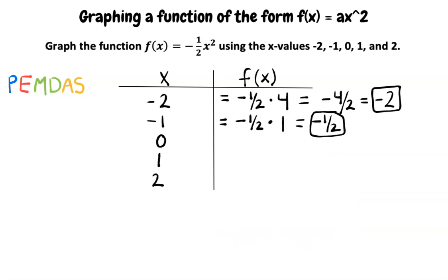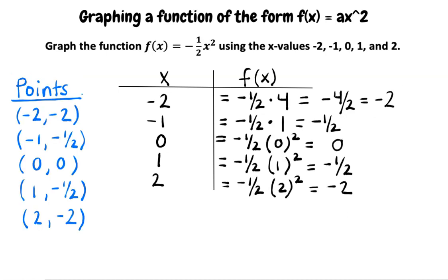Now we know our second point: (-1, -1/2). Continuing this for the rest of the points, we get the five points: (-2, -2), (-1, -1/2), (0, 0), (1, -1/2), and (2, -2).